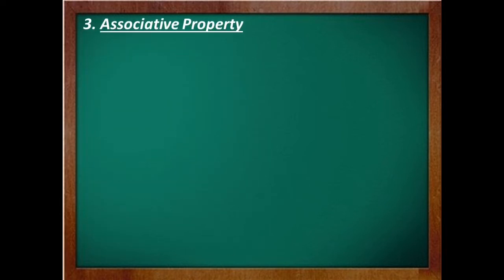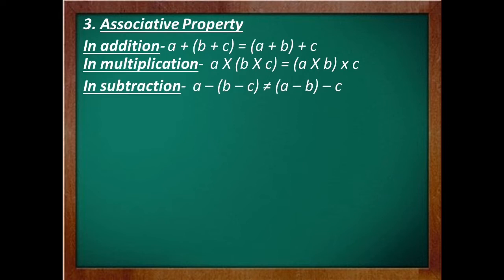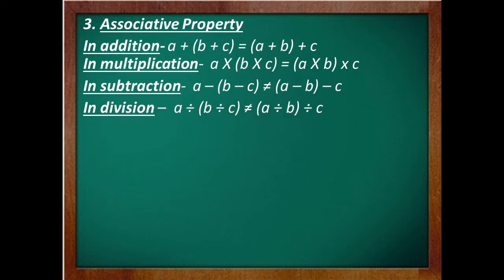The next property is associative property. It says that a change in the grouping of integers does not affect the sum or the product. But in the case of subtraction and division, if we change the grouping, the answer will come out to be different. So this property also holds in the case of addition and multiplication only.